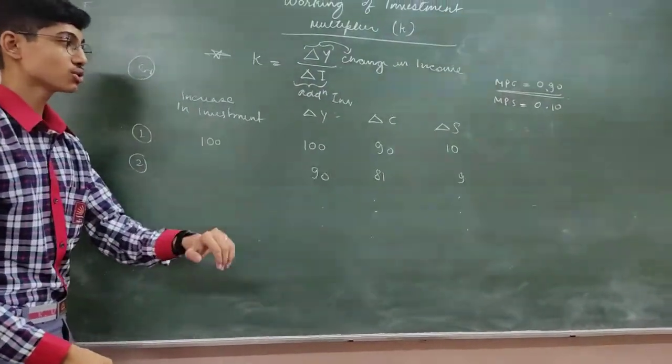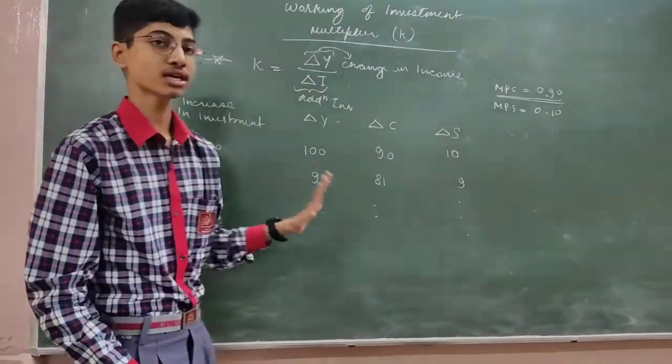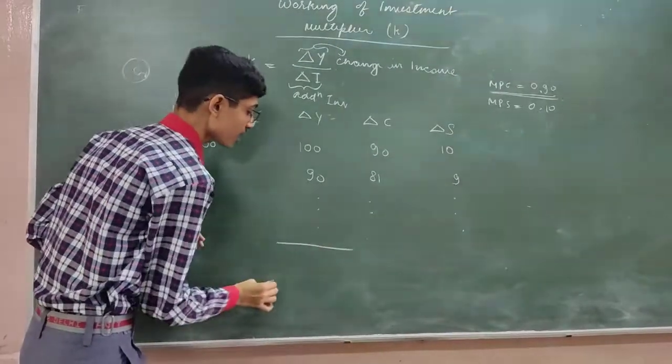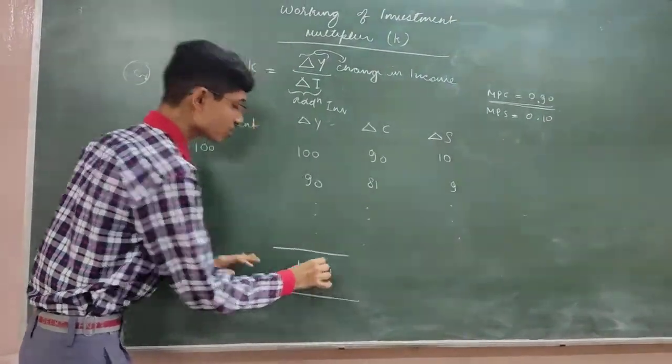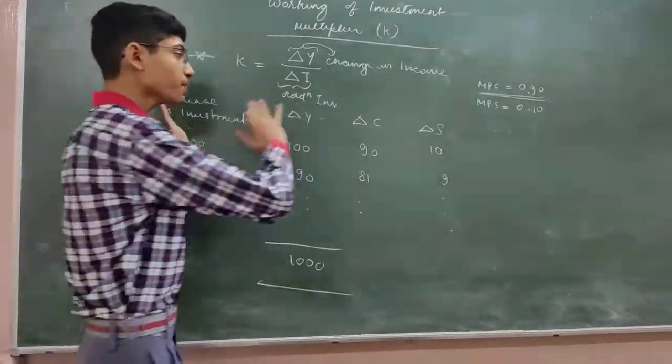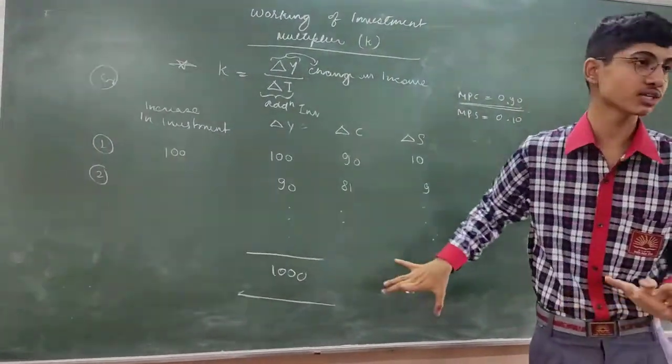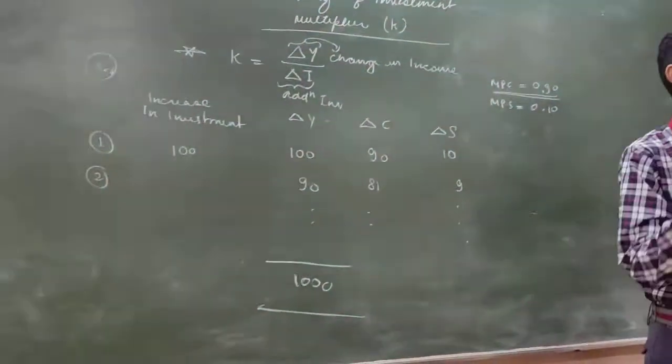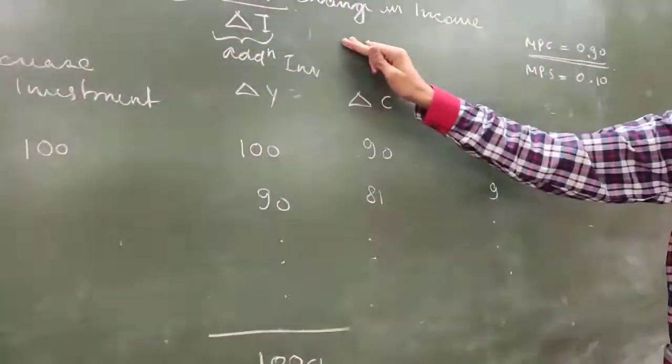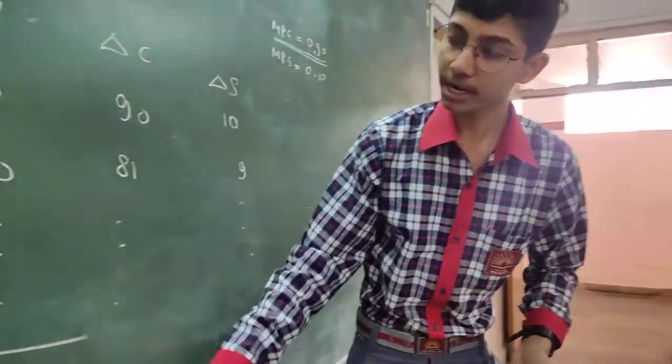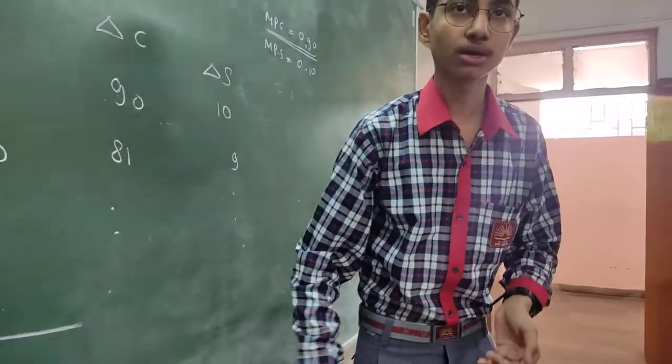So this is how it works. Now, let's assume that this process will go until the total is going to be 1000 crores. Now I don't have to make this whole table.